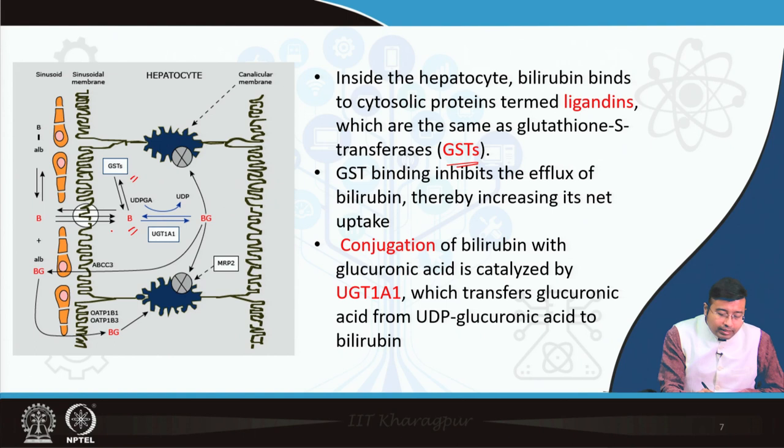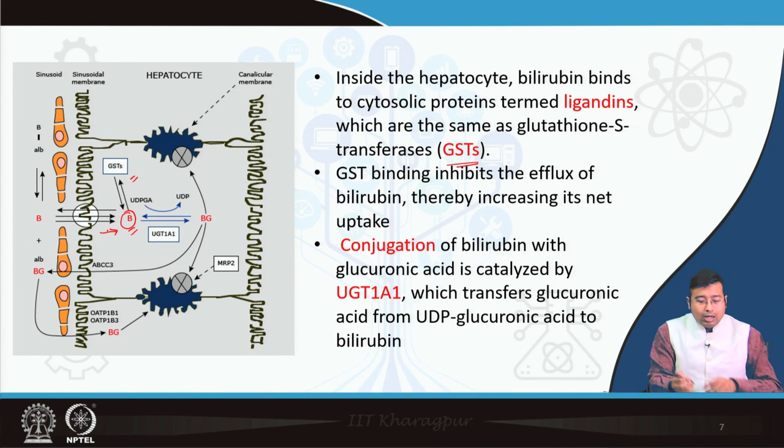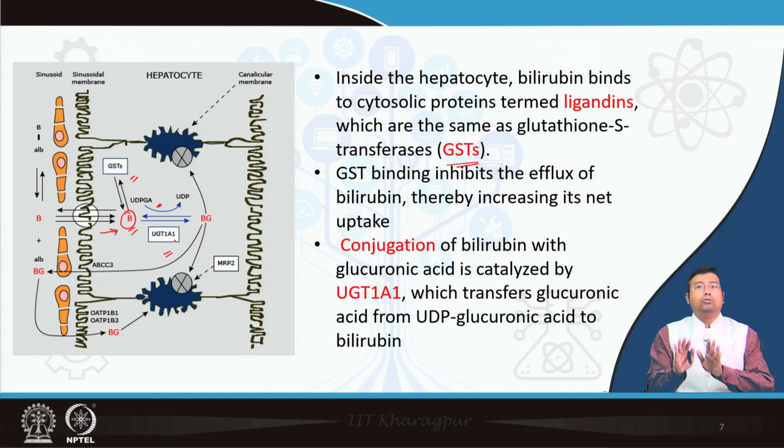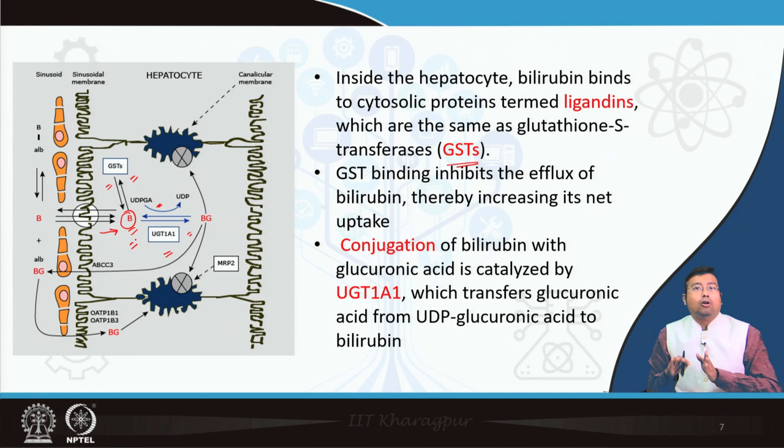When bilirubin is captured by the ligand, it facilitates inward movement. Because this bilirubin is being constantly utilized — number one by attaching to the ligand, and number two by conjugating with UDP glucuronic acid by the enzyme UGT1A1, UDP glucuronosyl transferase. Number one it binds to ligands, and number two it is conjugated. This is how bilirubin, which is water insoluble, becomes soluble.